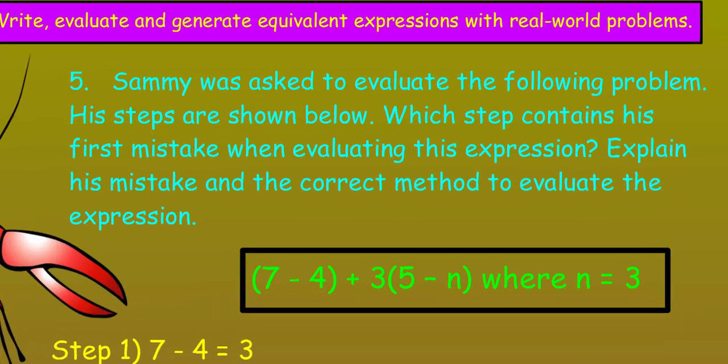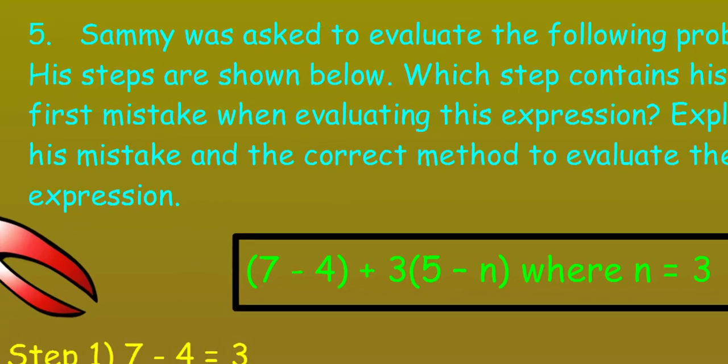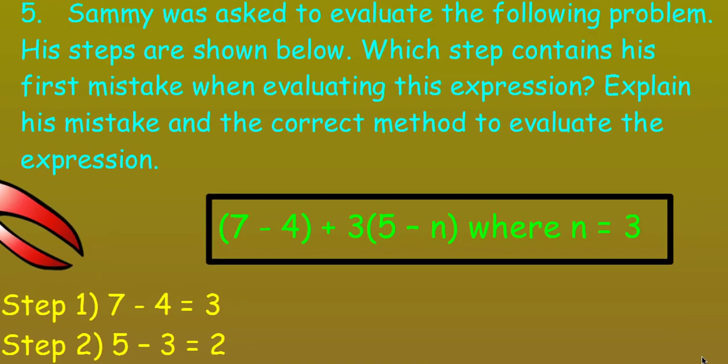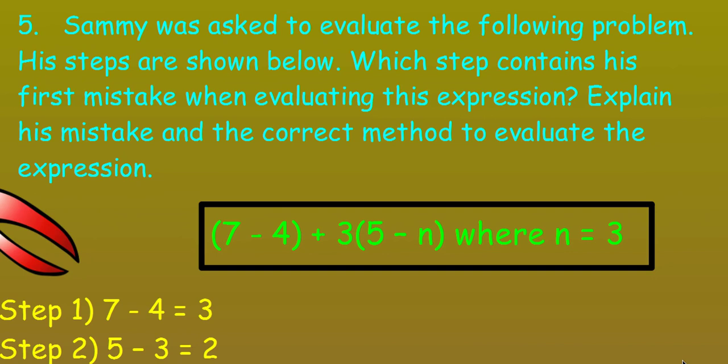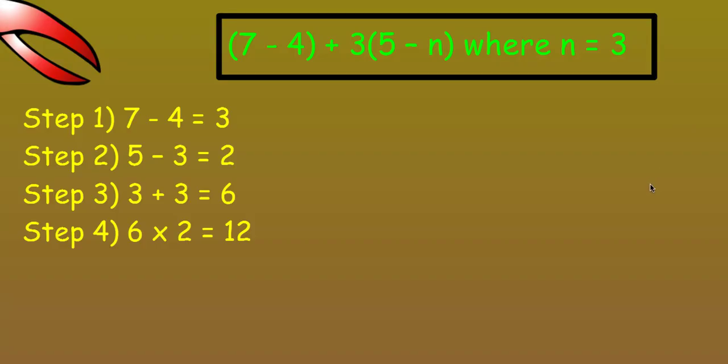We're going to continue on with question number five. It says, Sammy was asked to evaluate the following problem. His steps are shown below. In yellow! Which step contains his first mistake when evaluating this expression? Explain his mistake and the correct method to evaluate the expression. Cool, it's like we get to be the teacher! I'm looking at the expression.